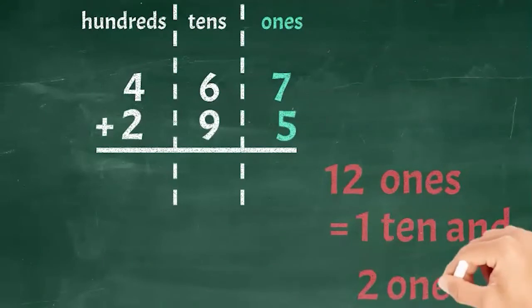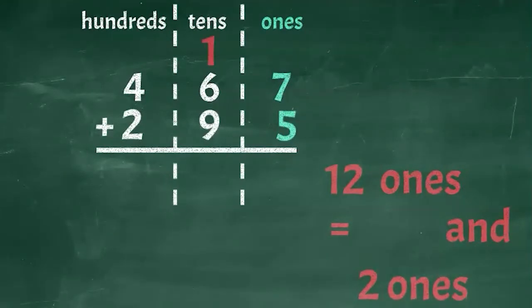We need to rewrite those 12 ones as one 10 and two ones. Then we can regroup. So let's place that one 10 above the tens place stack and we will place the two below the ones place stack.